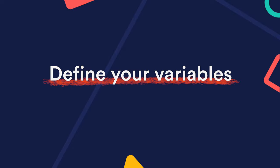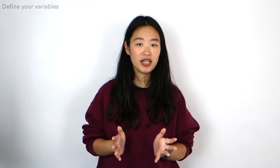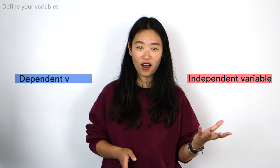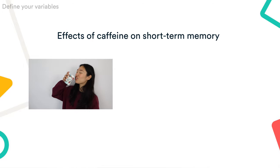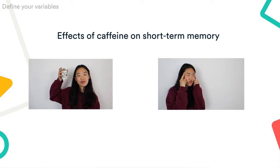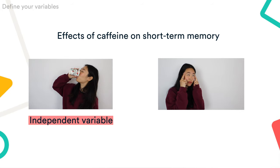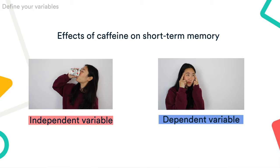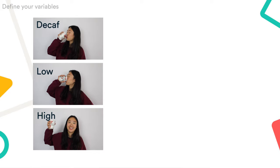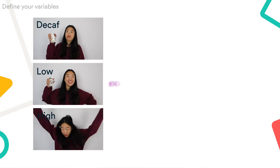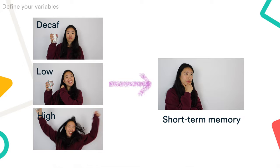First, identify your independent and dependent variables. In an experiment, you manipulate an independent variable and measure whether it causes a change in the dependent variable. For example, let's say you're interested in the effects of caffeine on short-term memory. By varying the amount of caffeine consumed by participants, you can test whether it causes any difference in short-term memory performance. You'll also need to control other variables that could affect your dependent variable outcomes.